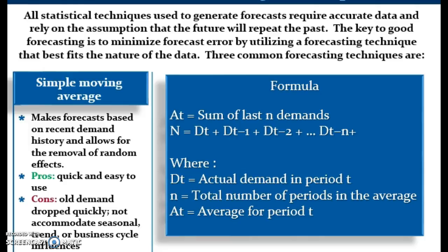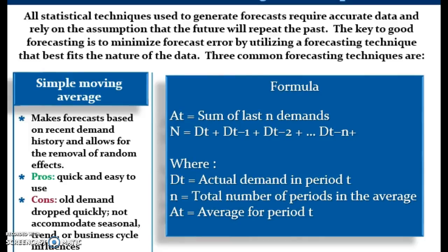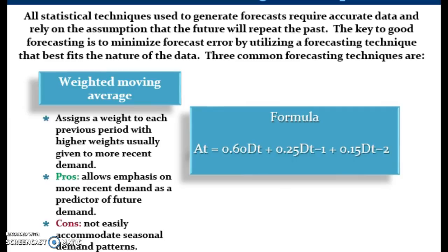There are many statistical techniques companies use to generate forecasts. The simple moving average is probably the simplest method in basic time series forecasting — it makes forecasts based on recent demand history and allows for the removal of random effects, but does not accommodate seasonal, trend, or business cycle influences. The weighted moving average method assigns a weight to each previous period, with higher weights given to more recent demand.